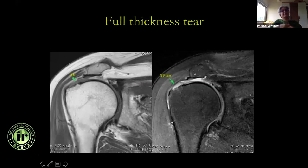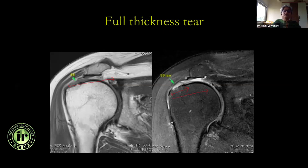A full thickness complete tear — the entire AP extent is torn, the entire tendon is torn. What is important is how much the tendon is retracted. This tendon is retracted up to the glenohumeral joint by approximately 4 centimeters. In another case it may be retracted 1.5 centimeters up to mid humeral head, or 3 centimeters up to medial humeral head. This is very important because the surgeon can decide whether arthroscopic surgery can pull the tendon back, or whether it's too retracted — poor prognosis, may require open surgery or tendon transfer.